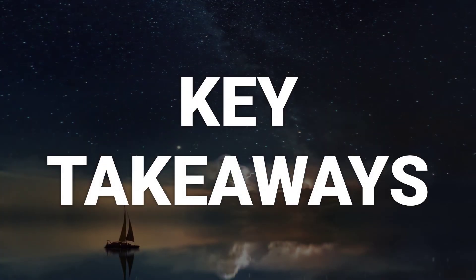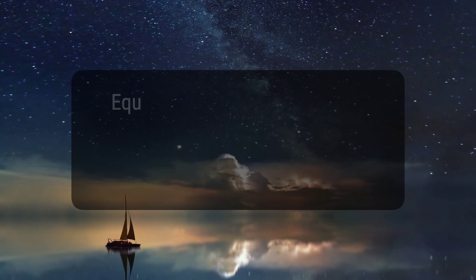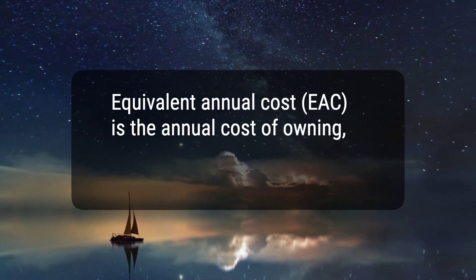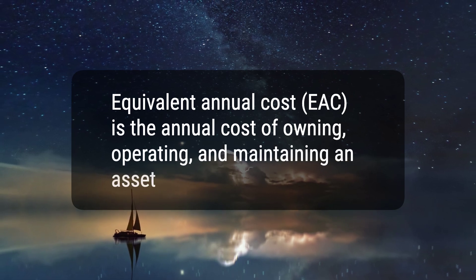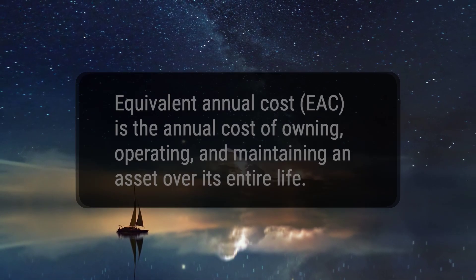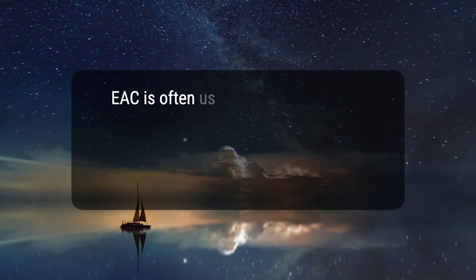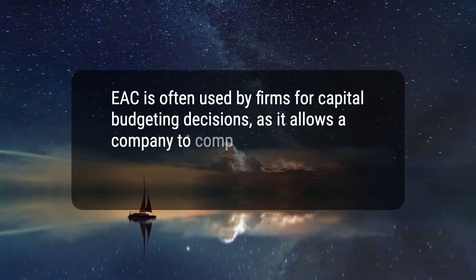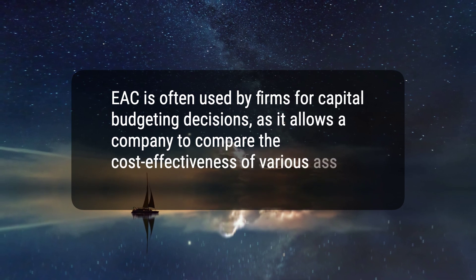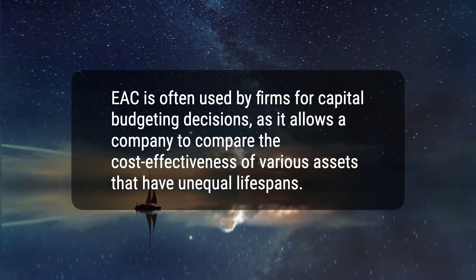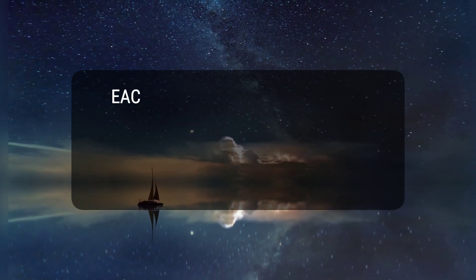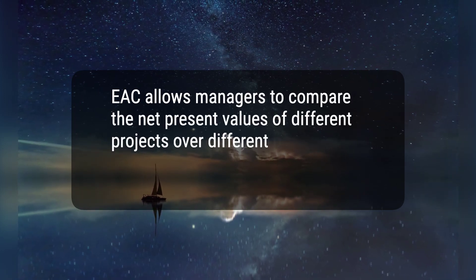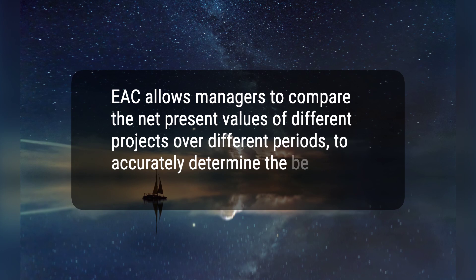Here are three key takeaways. 1. Equivalent Annual Cost, EAC, is the annual cost of owning, operating, and maintaining an asset over its entire life. 2. EAC is often used by firms for capital budgeting decisions, as it allows a company to compare the cost-effectiveness of various assets that have unequal lifespans. 3. EAC allows managers to compare the net present values of different projects over different periods, to accurately determine the best option.